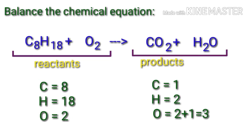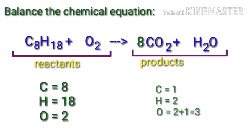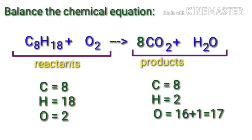In this equation, we need to balance the carbon atoms first. To do this, we need to put a coefficient of 8 in front of CO2. The carbon atoms are balanced. Now you can balance the hydrogen atoms.